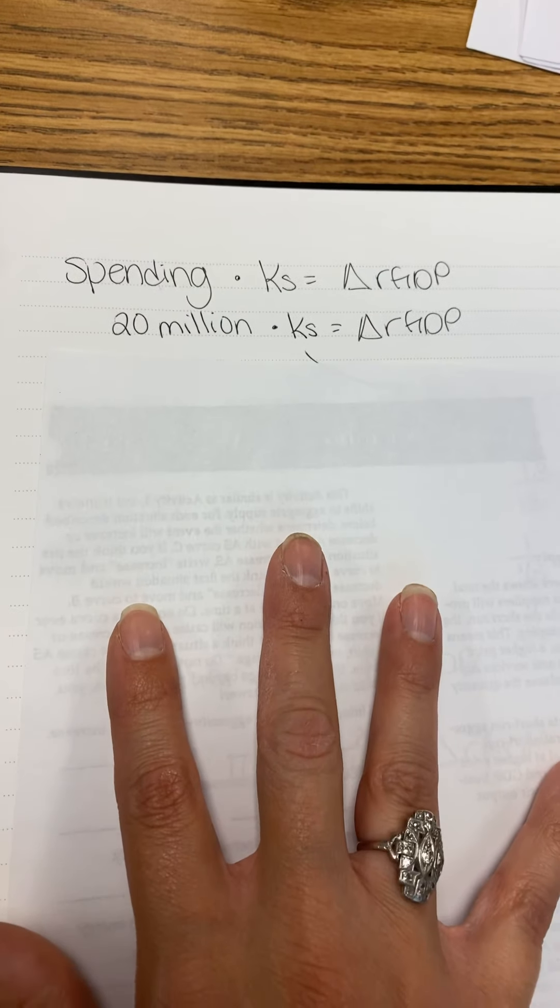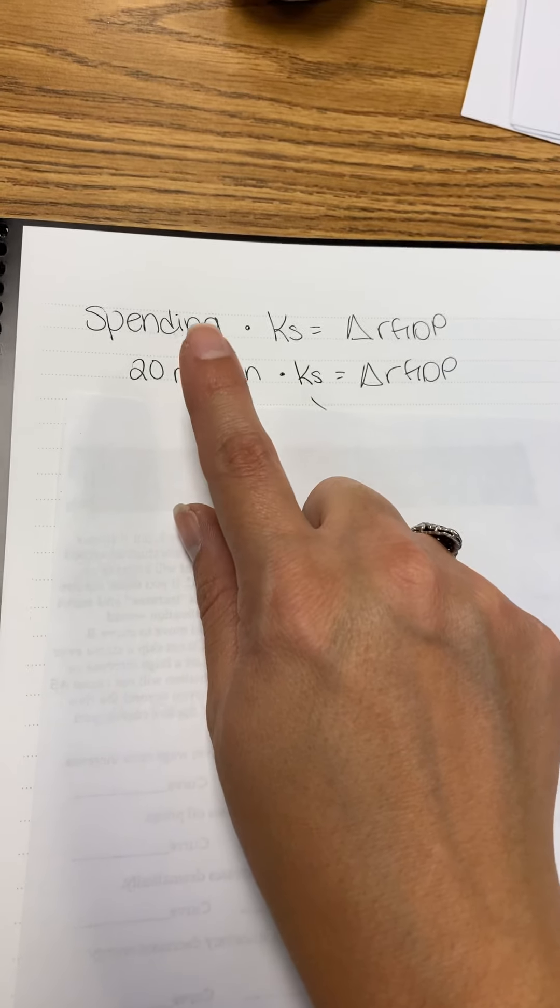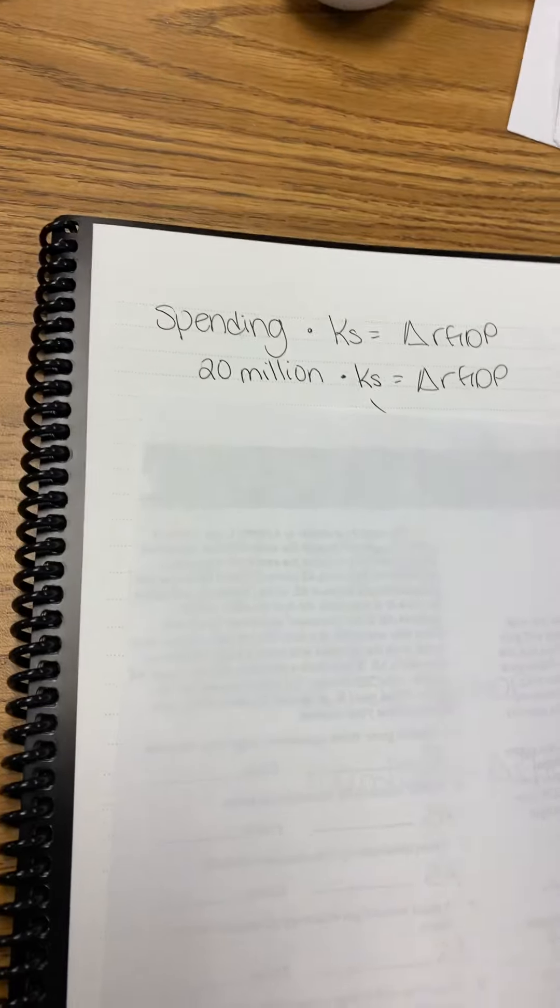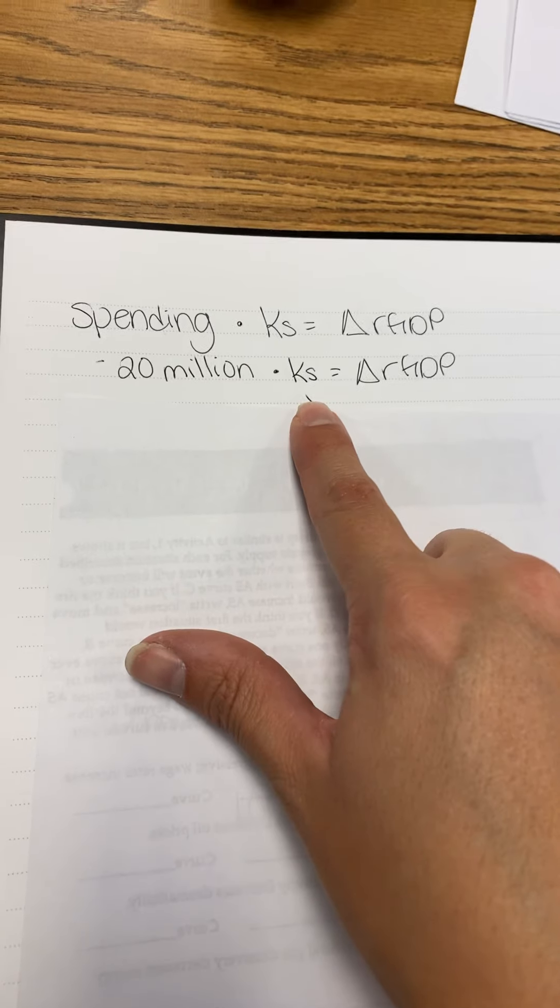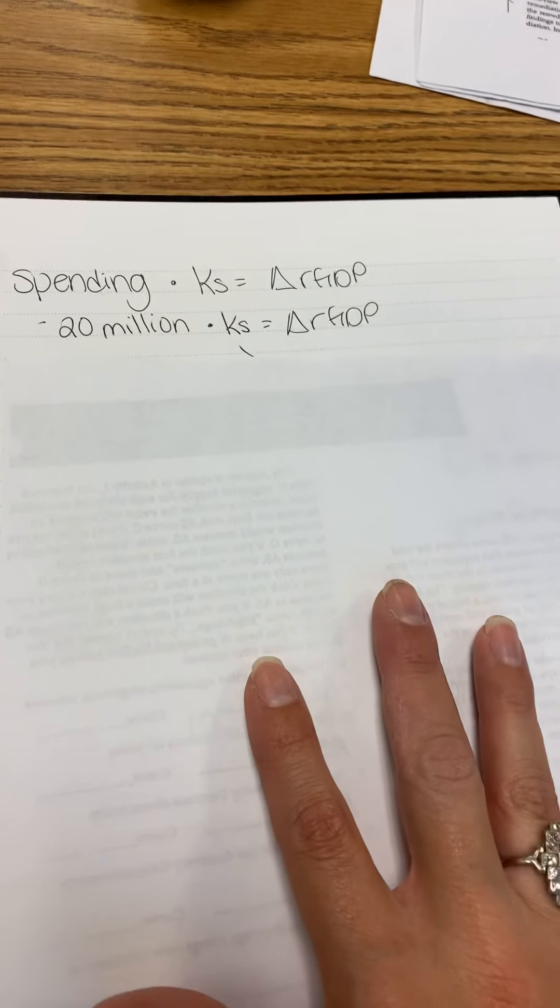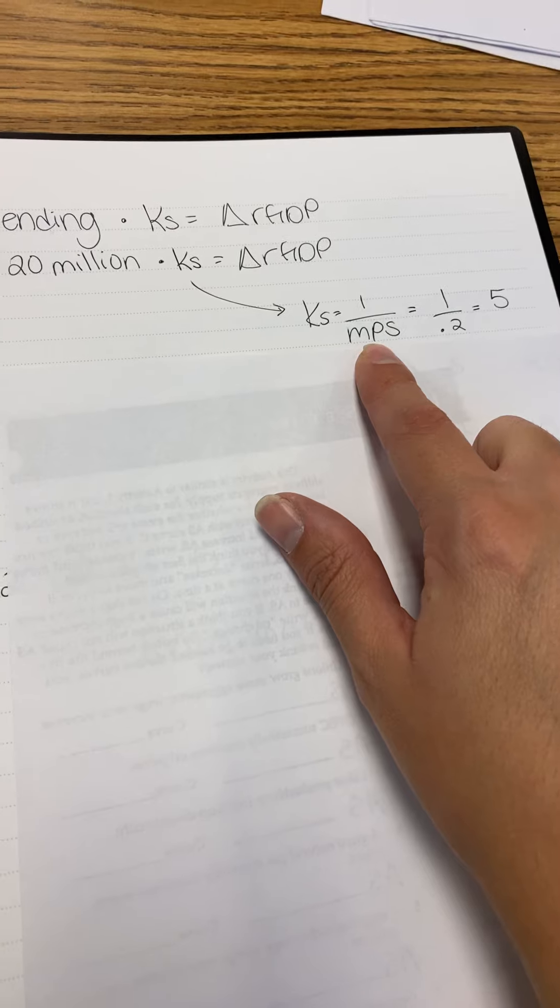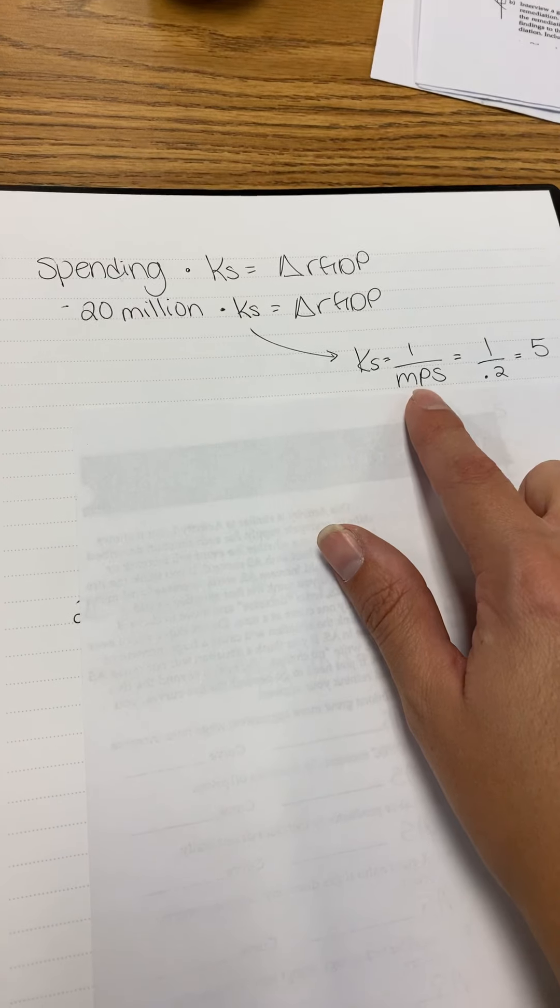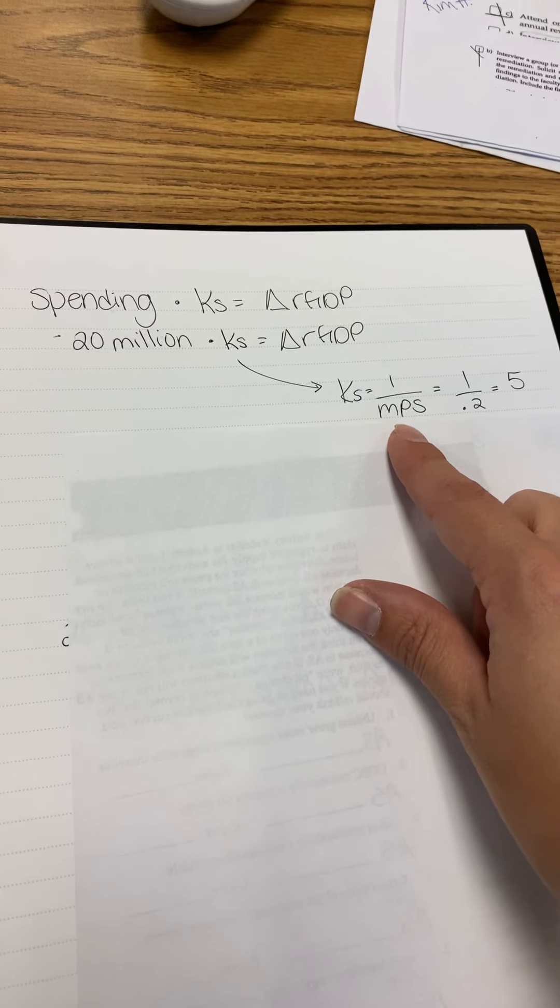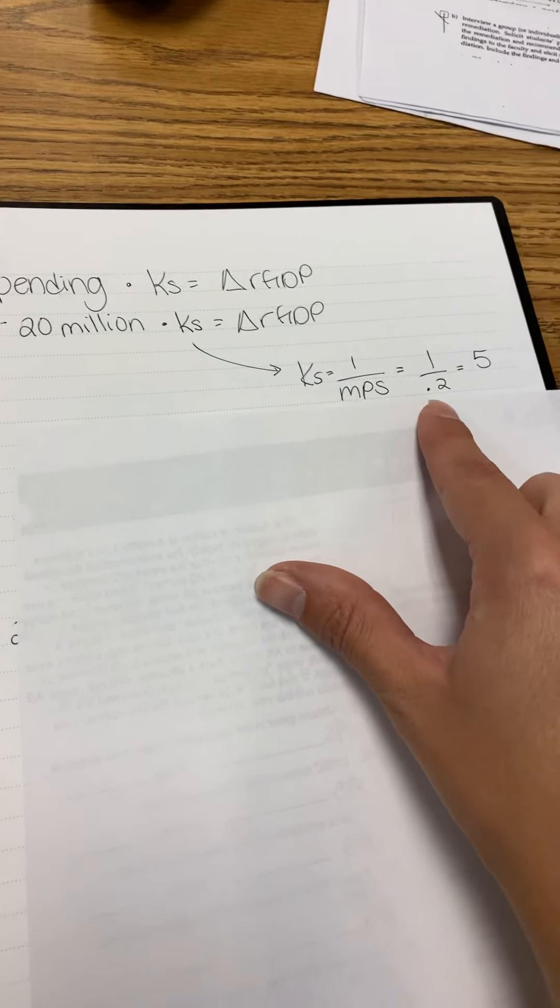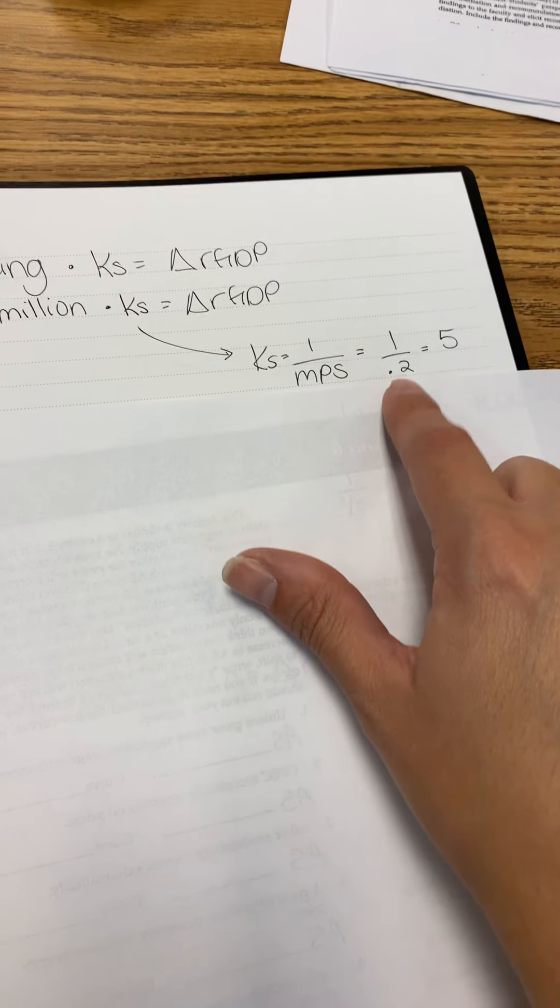So I fill out what I know. Investment spending decreased by $20 million. I don't know KS directly and I'm solving for GDP. But I know the KS formula is 1 over MPS. MPS is not given to us in the problem, MPC is. It says MPC is 0.8 in the problem. Well, I know that MPC plus MPS is equal to 1. So if MPC is 0.8, MPS has got to be 0.2. So 1 over 0.2 gives you 5.